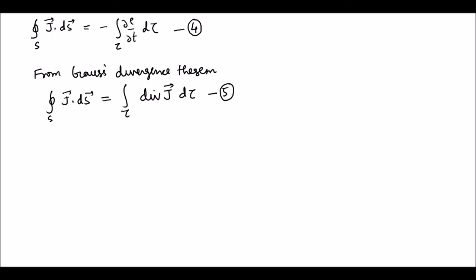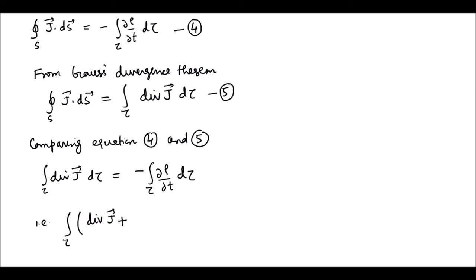Now comparing equations four and five, we have divergence J d tau integrated over tau is equal to d rho/dt d tau integrated over tau. That is, we can write it as integration over tau, divergence J plus d rho/dt d tau, and this whole is equal to zero. And this is equation number six.